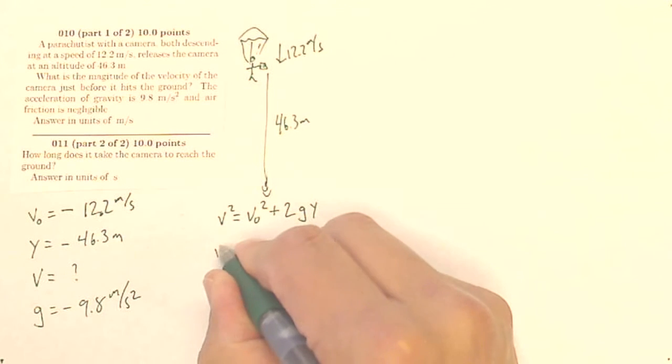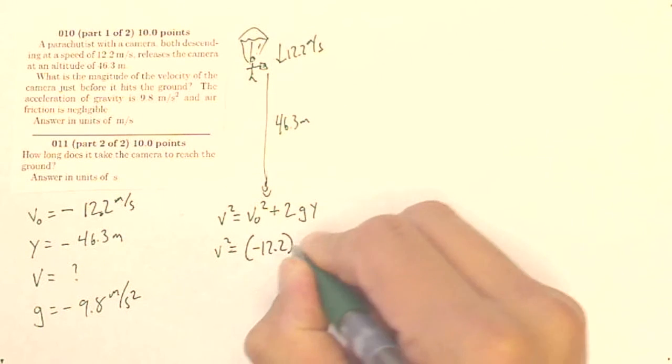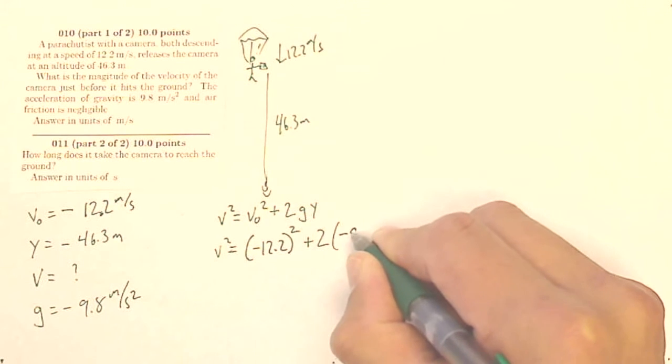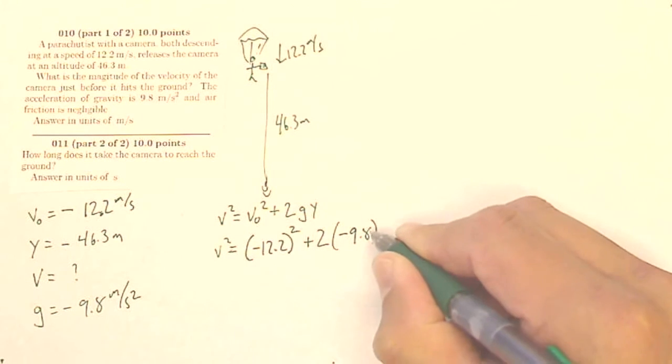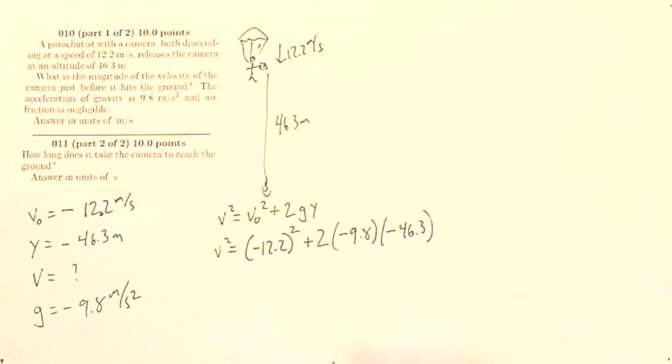So final velocity squared is my initial velocity squared of negative 12.2 squared plus twice my gravity, which is negative 9.8, and my displacement, which is negative 46.3.